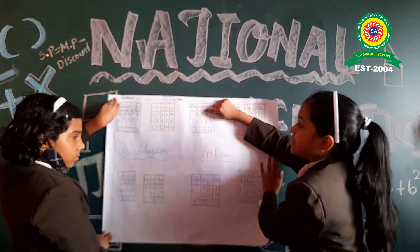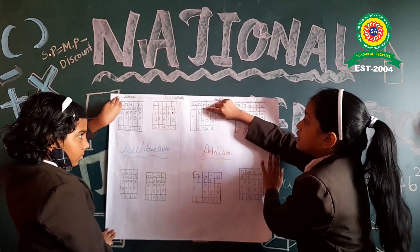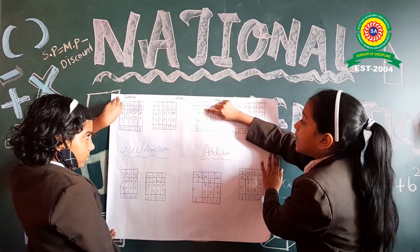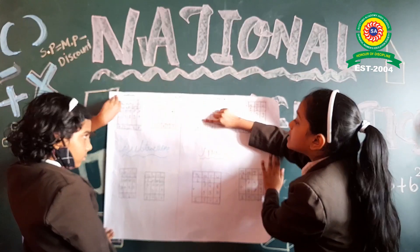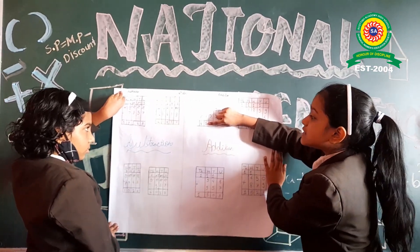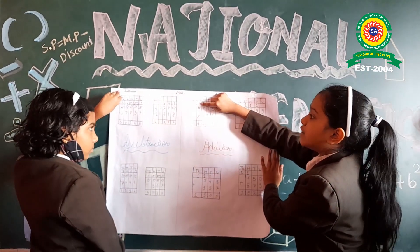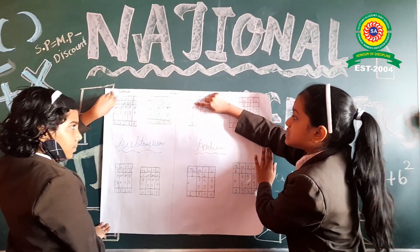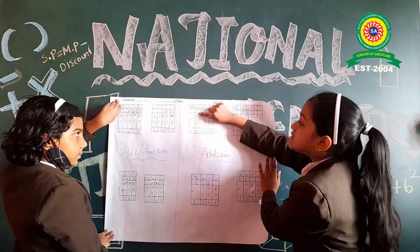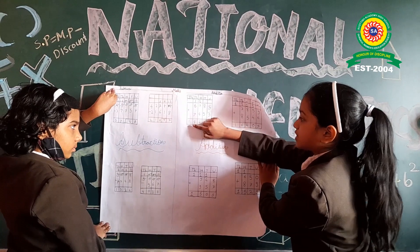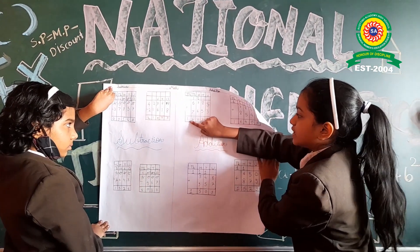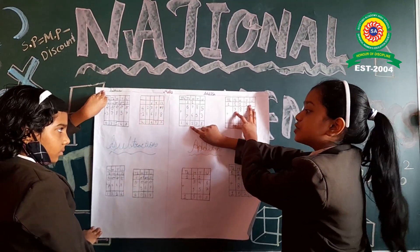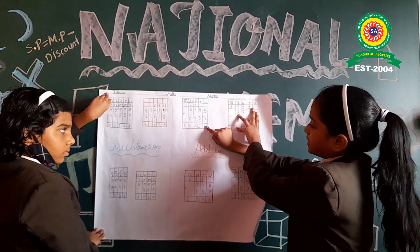3 is here and 1 is here. 7 plus 1 is equal to 8. 8 plus 4 is equal to 12. 2 is here and 1 is counting. 6 plus 1 is equal to 7, and 7 plus 7 is equal to 14. So 14 here. So the number is 14,238.